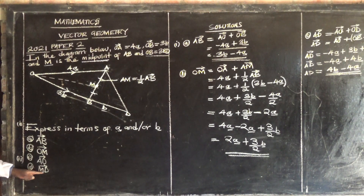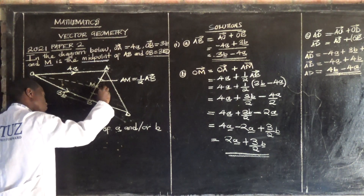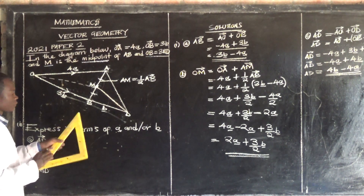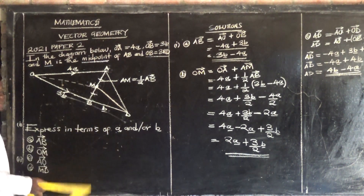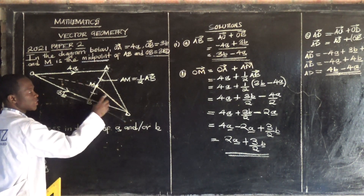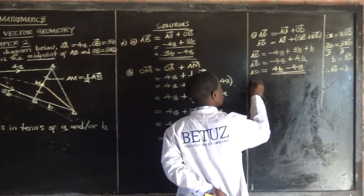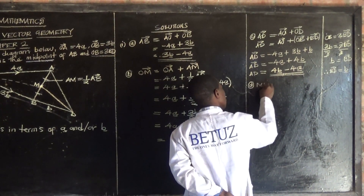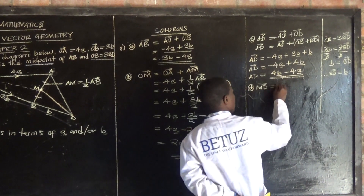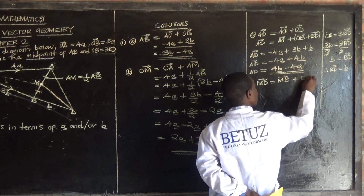Now let's find MD — from M to D. How can we move from M to D? You can say MB plus BD. So MD equals MB plus BD.